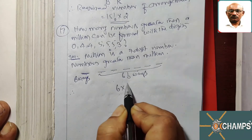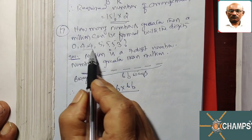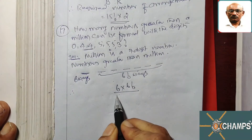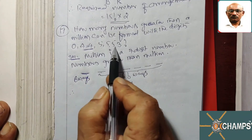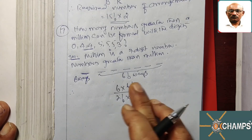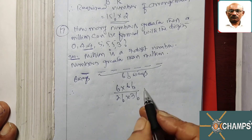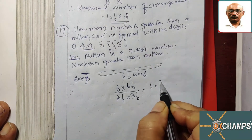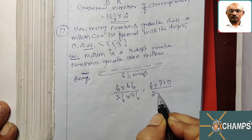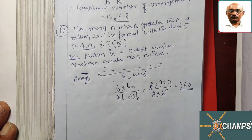Therefore, it is 6 × 6! divided by 2! × 3!, because one number is repeated two times (so divide by 2!) and one number is repeated three times (so divide by 3!). This is to avoid double counting. So 6 × 720 divided by 2 × 6 = 360. The answer is 360.